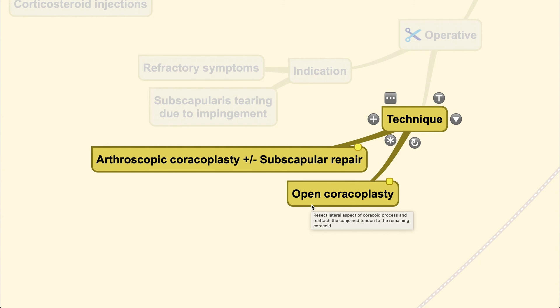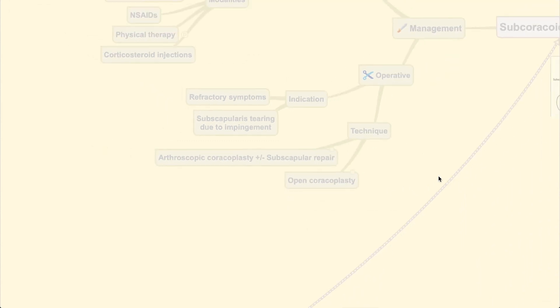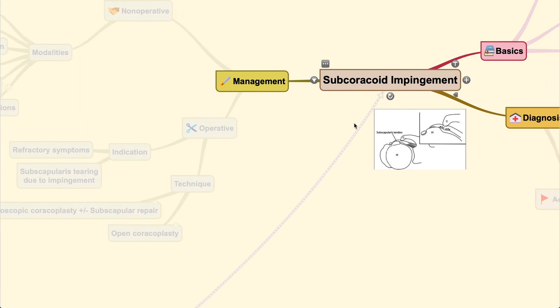After resecting the lateral coracoid, you need to reattach the conjoined tendon — which runs along the lateral coracoid — back to the remaining coracoid process. That concludes today's video on subcoracoid impingement.